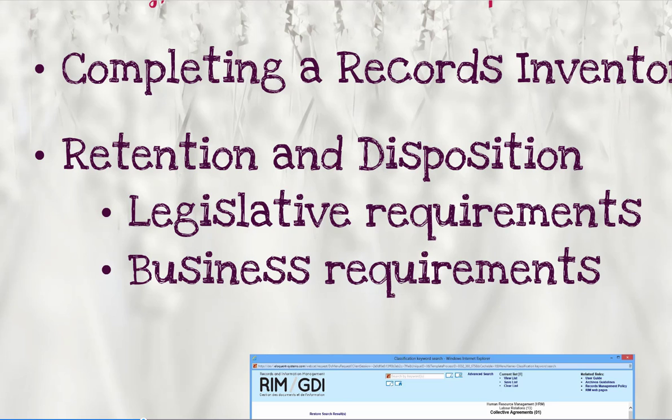There are many pieces of legislation that specify how long specific types of records need to be kept. Financial acts often specify seven years, for example. Some will give you minimum lengths, others will give you maximum. Some specify certain records, others will simply refer to the type of information, wherever it may be found.